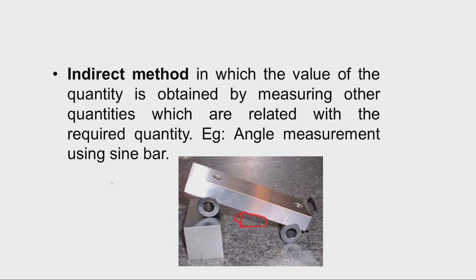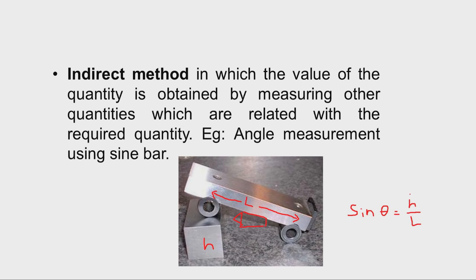We need to measure the taper of the component. A sin bar of appropriate length is placed on it, and there is a gap between the roller and the datum that we fill using slip gauges. Here h is the height of the slip gauge and l is the length of the sin bar (the center distance between the two rollers). We calculate the taper angle using the relationship sin θ = h / l. Some calculation is involved in the indirect method.